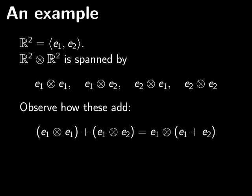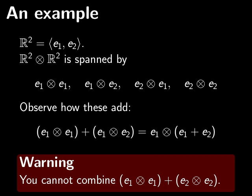For example, how do these things add? E1 tensor E1 plus E1 tensor E2 is E1 tensor the sum E1 plus E2. And by using these kind of properties, any sum of tensors can be rewritten as a sum of those four tensors above. Just a warning though, you can't combine E1 tensor E1 with E2 tensor E2. Everything in R2 tensor R2 is a sum of the four basis vectors, E1 tensor E1, E1 tensor E2, E2 tensor E1, E2 tensor E2. But not everything in R2 tensor R2 can be written as a vector in R2 tensor a vector in R2. Sometimes you have to write them as sums of those tensors.